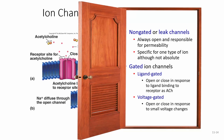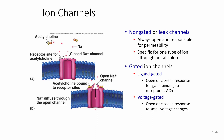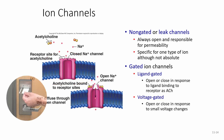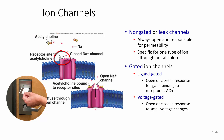Then we have gated ion channels. An example is the ligand-gated channel. This reminds me of a key card — the ligand, in this case the neurotransmitter acetylcholine, is your key card. It attaches to the receptor sites for acetylcholine, like inserting your key card into a reader. Once the key card is in, the door opens; pull it out, and the door closes.